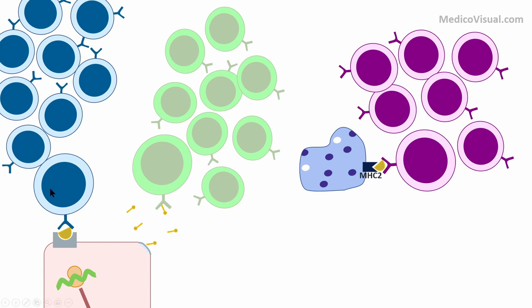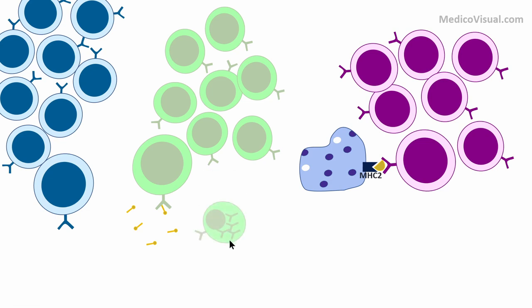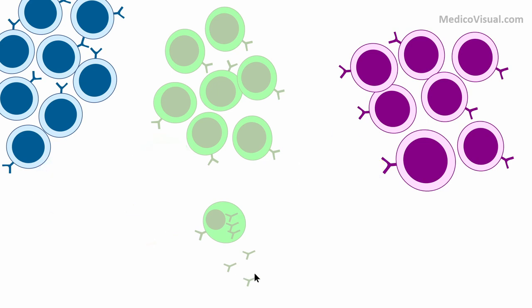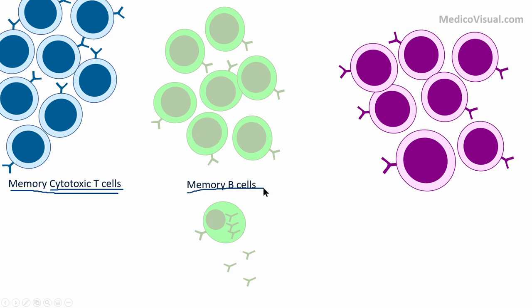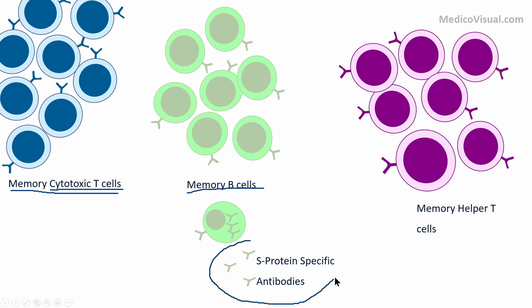As the specific cytotoxic T cells become active, they will destroy the vaccine-infected cells. This is not something to worry about — we have trillions of cells in our body and daily some are lost and replaced by new cells. Some of these B lymphocytes will start secreting antibodies against the spike protein, and some cells from these clones will form memory cells — memory cytotoxic T cells, memory B cells, memory helper T lymphocytes — and of course we will have these spike protein-specific antibodies.